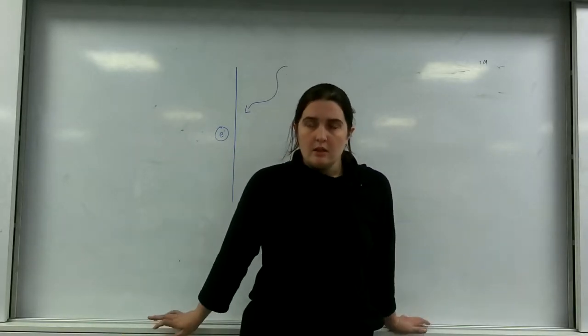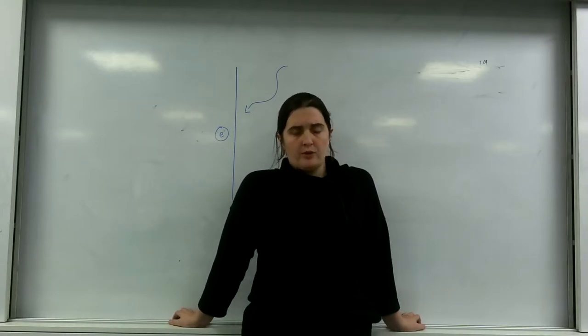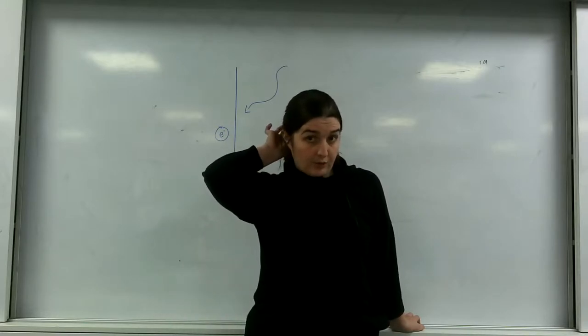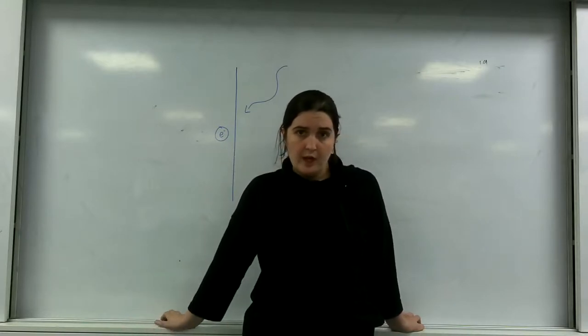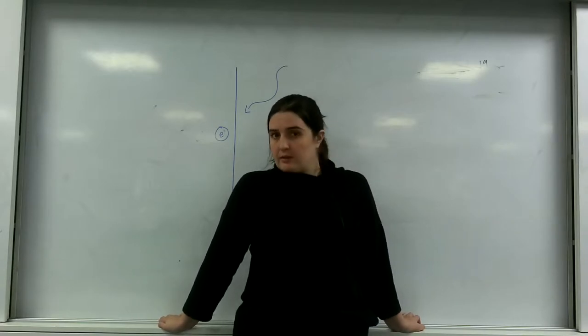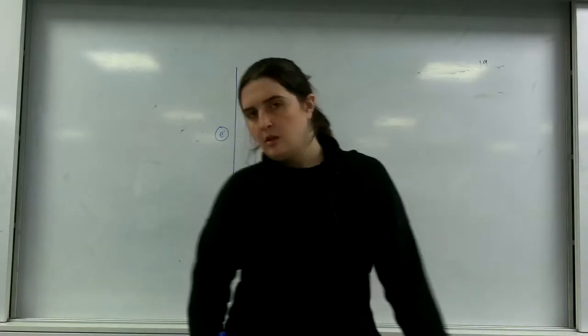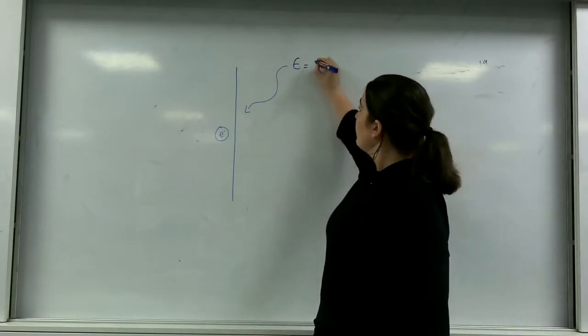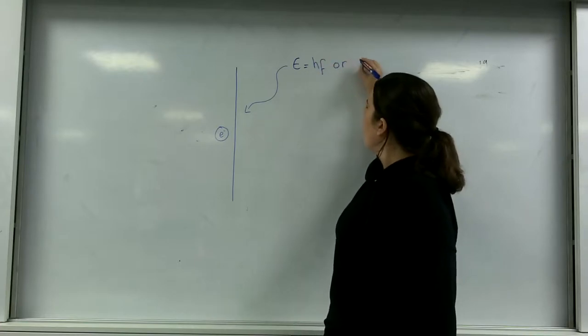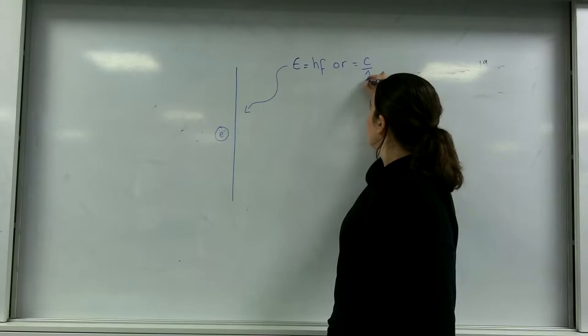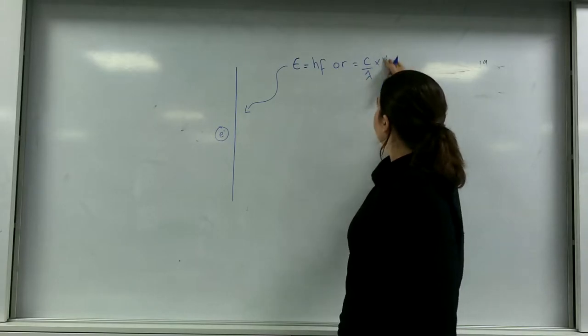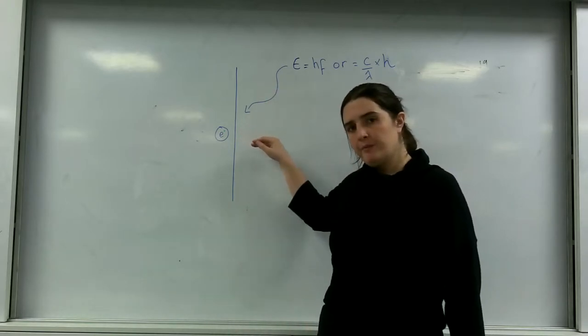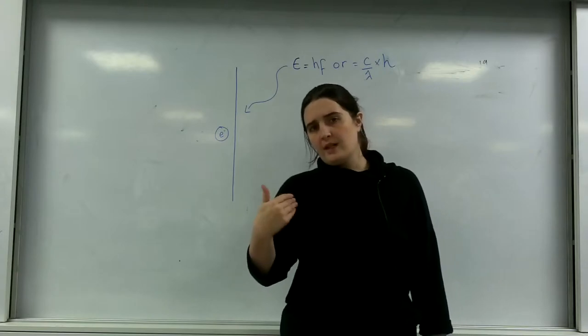The photoelectric effect is an unusual way where a photon, light, a wave, interacts with materials and an electron is released. What happens is that one photon with an energy calculated by the formula E equals HF, or C over lambda times H, comes into a material and interacts with an electron.